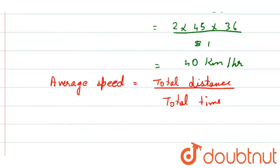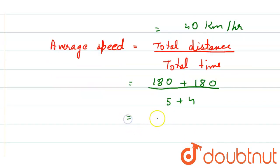Now if we put the values here, we will get 180 plus 180 by total time is how much? 5 plus 4, right? So if we calculate, we will get 360 by 9.